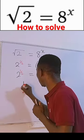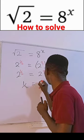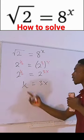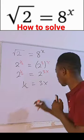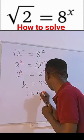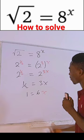Let's get rid of the fraction by multiplying by 2, so that we have 1 equals 6x.